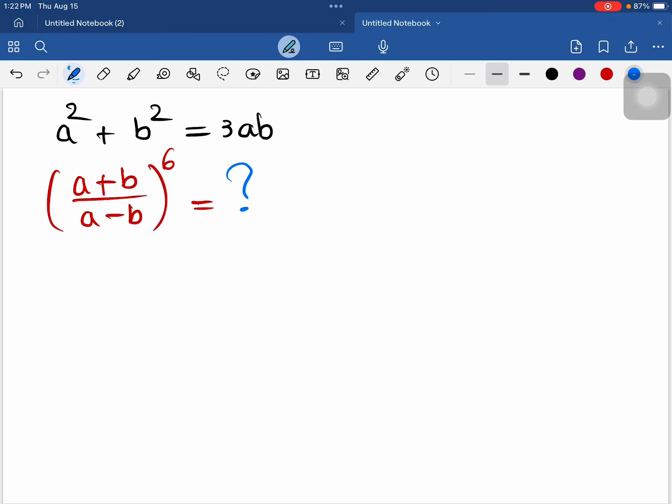Hello everyone. In this video, I would like to explain a Singapore algebra problem. Given that a squared plus b squared equals 3ab, find the value of a plus b over a minus b to the power of 6.